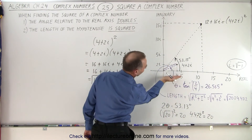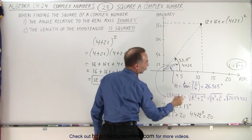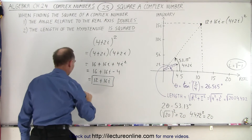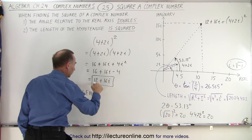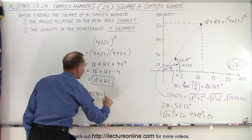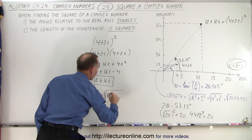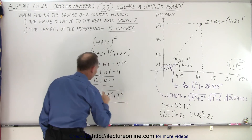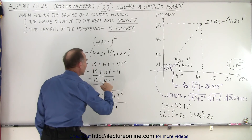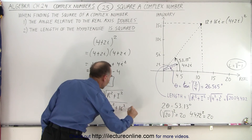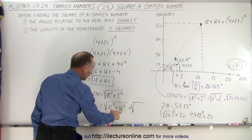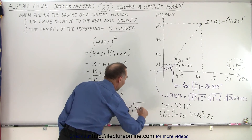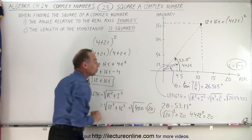Notice that point is at an angle of 53.13 degrees, which is twice the angle of the original number. Let's verify the length: the magnitude of the squared value equals the square root of the real part squared plus the imaginary part squared — that's the square root of 12 squared plus 16 squared, which is the square root of 144 plus 256, which is the square root of 400, equal to 20. And that's exactly what we were expecting.